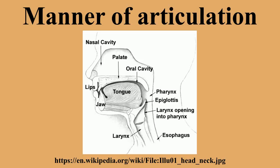Individual manners — Stop (oral occlusive): Where there is occlusion of the oral vocal tract and no nasal airflow, so the airflow stops completely. Examples include English P, T, K, and B, D. If the consonant is voiced, the voicing is the only sound made during occlusion; if it is voiceless, a stop is completely silent. What we hear as P or K is the effect that the onset of the occlusion has on the preceding vowel, as well as the release burst and its effect on the following vowel. The shape and position of the tongue determine the resonant cavity that gives different stops their characteristic sounds. All languages have stops.